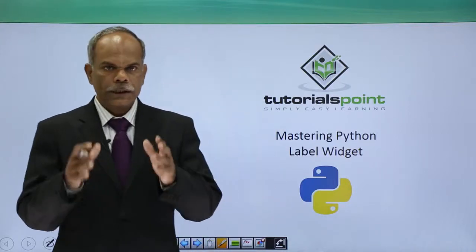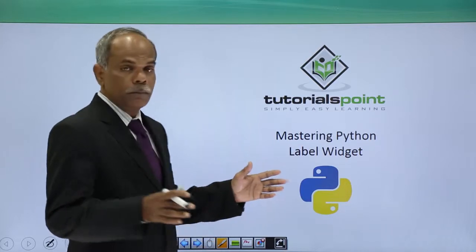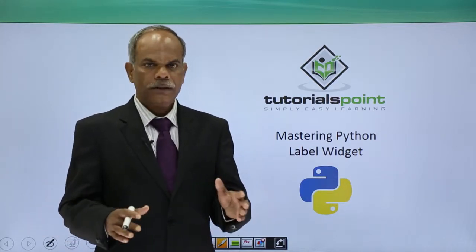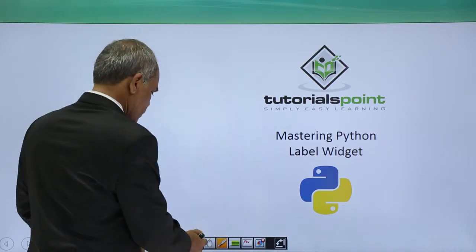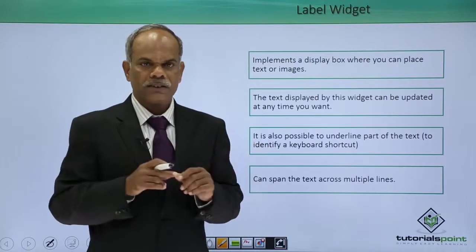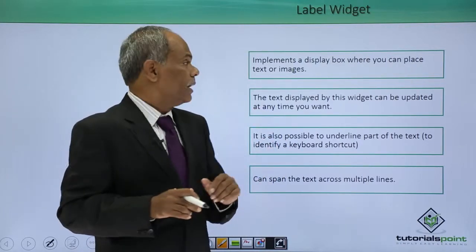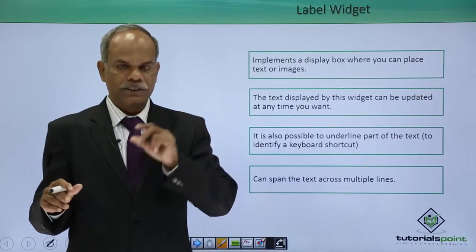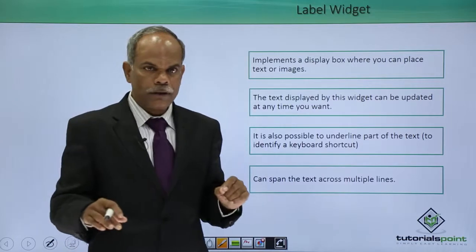Hello friends. In this video I will explain to you the properties of a label widget in the Tkinter library. Label is a box, generally a rectangular box, in which you can place or put certain text or image which is the caption of that particular label.